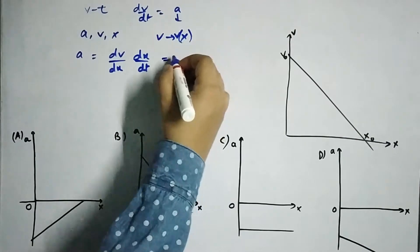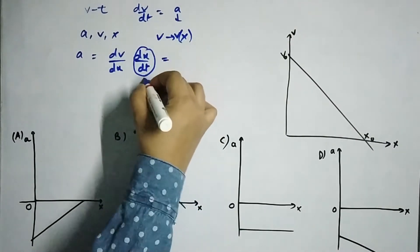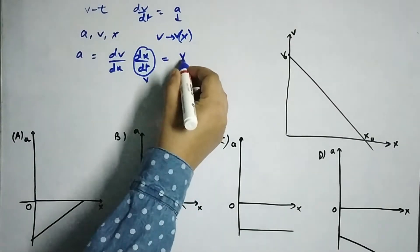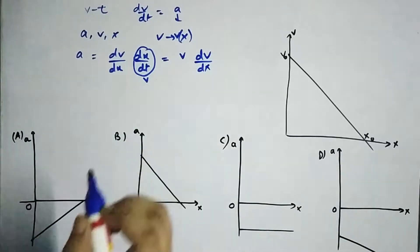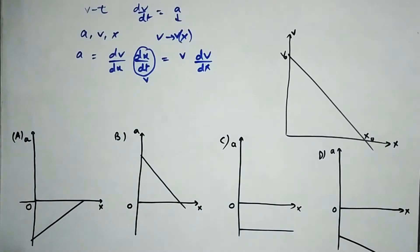So this will lead us to, this will become v, this is the current v and this will remain as it is. Okay, now here we can easily see, some of you who has a good understanding of graphs,